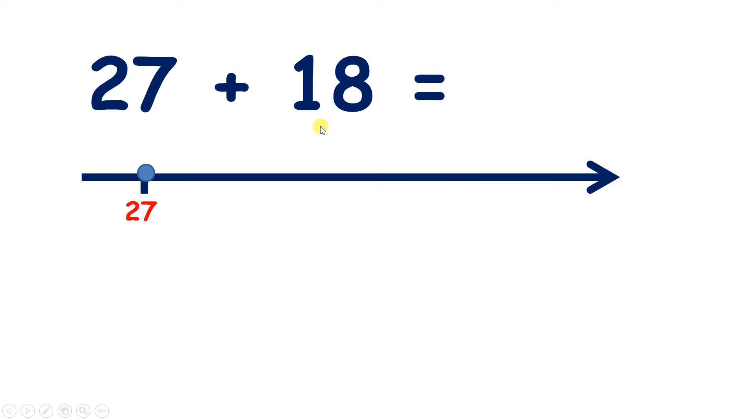Now how could we add 18? Well, 18 is 2 less than 20, so we can add 20, then subtract 2. So if we add 20, we get 47. And now if we subtract 2, we have 45.